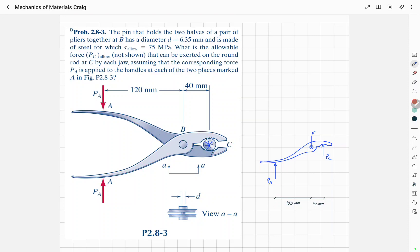a round rod between the jaws of the plier. The allowable shear stress for this pin is given to us which is 75 megapascals. We also have its diameter which is 6.35 millimeters, and now the question wants us to calculate the allowable force that can be applied to this rod here at point C.